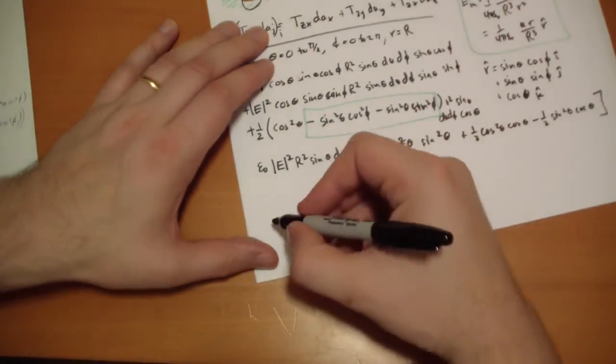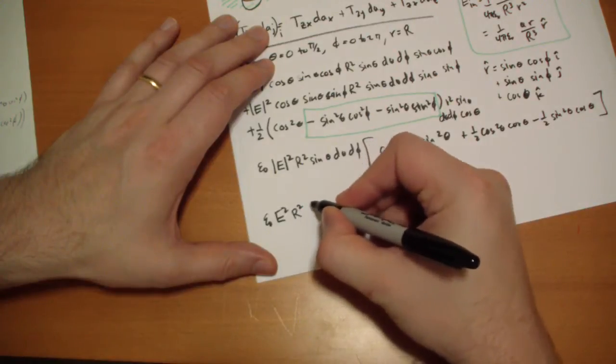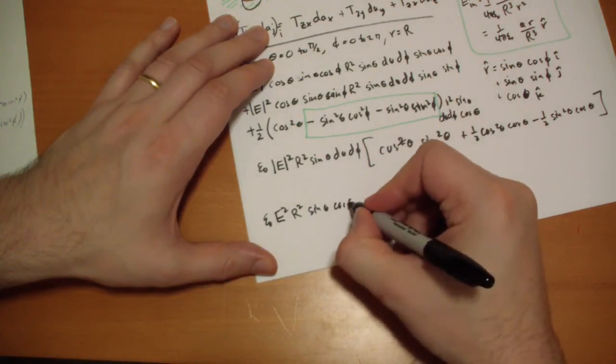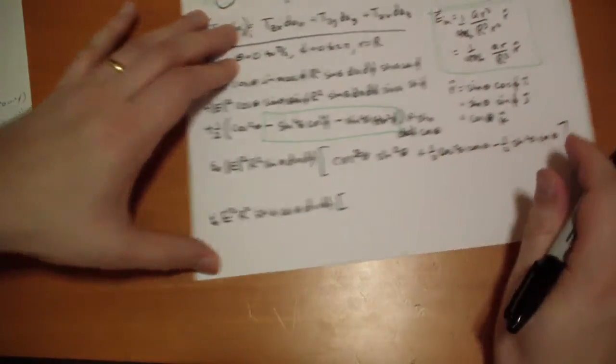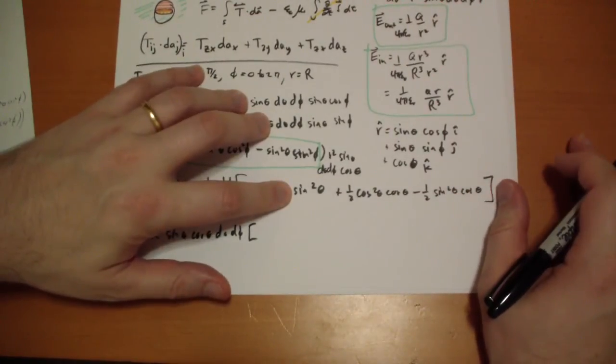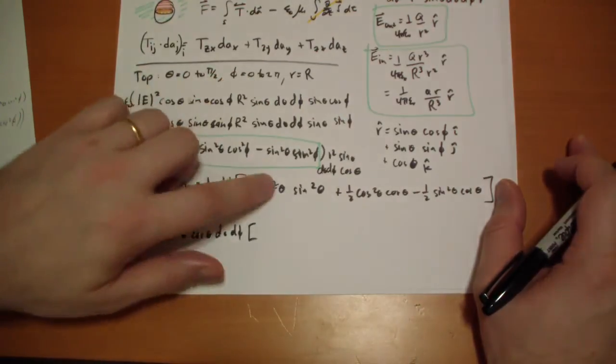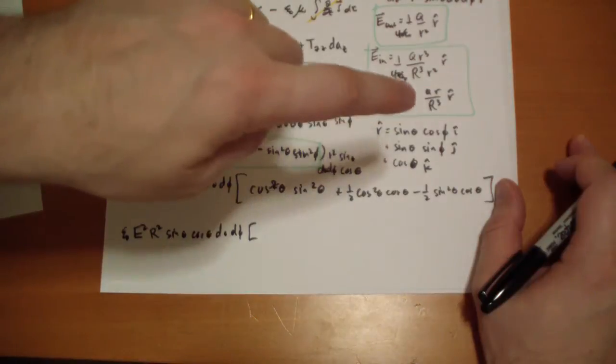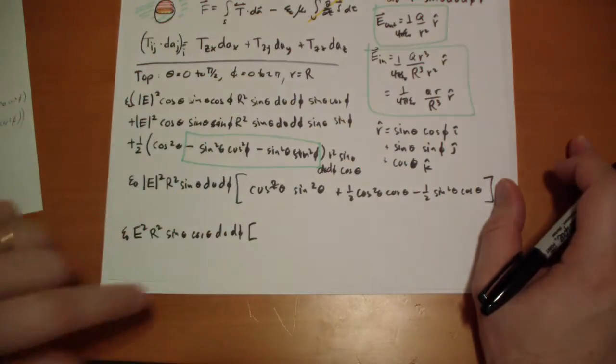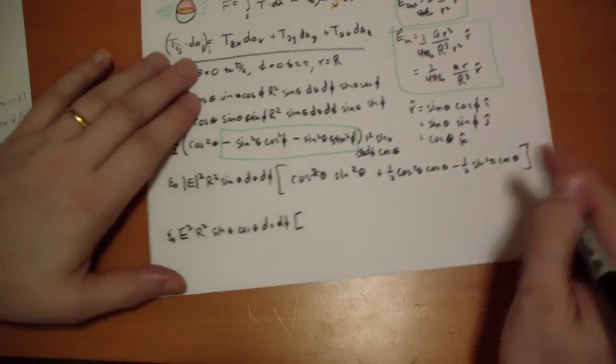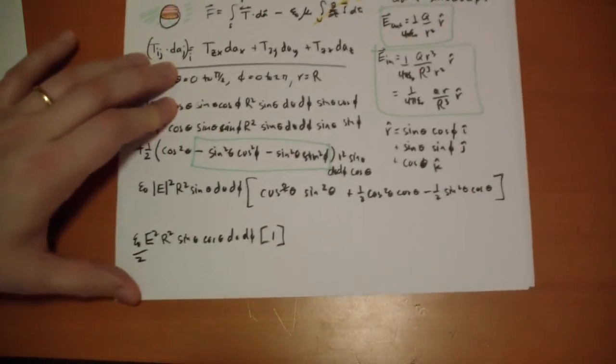So, let's bring out the factor of epsilon naught, E squared, r squared, sine theta, and the cosine theta term, d theta, d phi, times, we have sine squared theta. We have one-half cosine squared theta, minus one-half sine squared theta. Sine squared theta minus one-half sine squared theta is one-half sine squared theta. One-half sine squared theta plus one-half cosine squared theta is one-half. So, we bring out the factor of two, and that all becomes one.